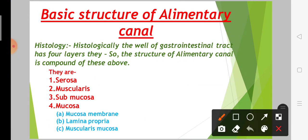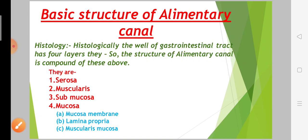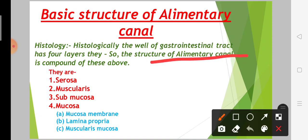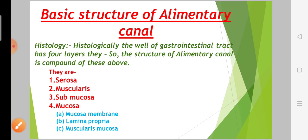Friends, the gastrointestinal tract — how many layers are there? There are 4 layers total. The structure of the alimentary canal is composed of 4 layers.